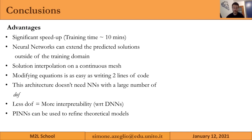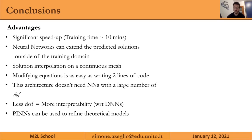We also don't have a very high number of degrees of freedom. In particular, this architecture doesn't need a very deep neural network, which leads to more interpretability. Another important advantage is that physics-informed neural networks can be used for data-driven purposes — to extract new components from theoretical models and to provide a tool which can refine theoretical models as well.